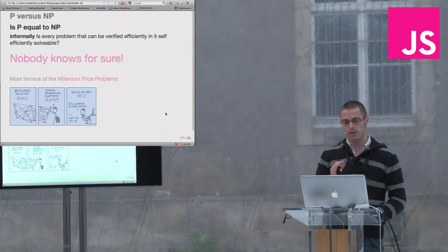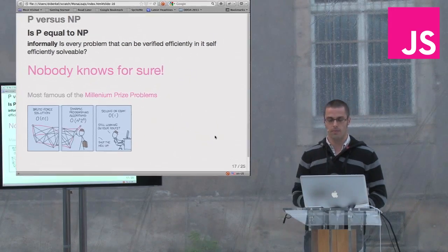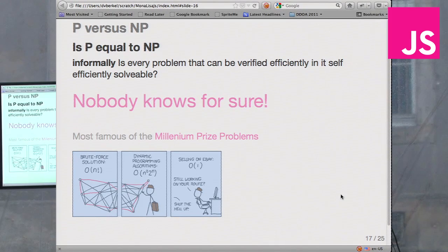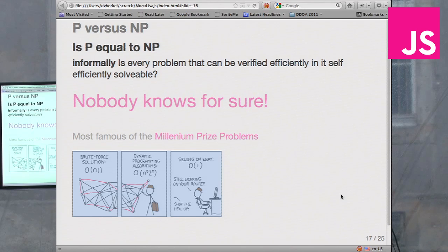Another reason why it's famous is that XKCD did a comic on it. The brute force solution — the big O notation says the runtime is O(n!), end factorial — that's a long time. You can do it a little bit better, but still it's a long time. Nobody knows an efficient algorithm to solve this problem.